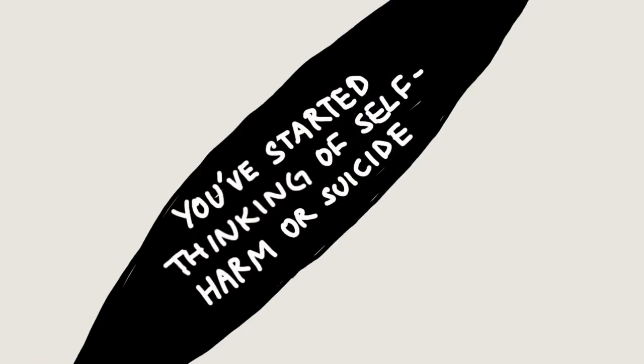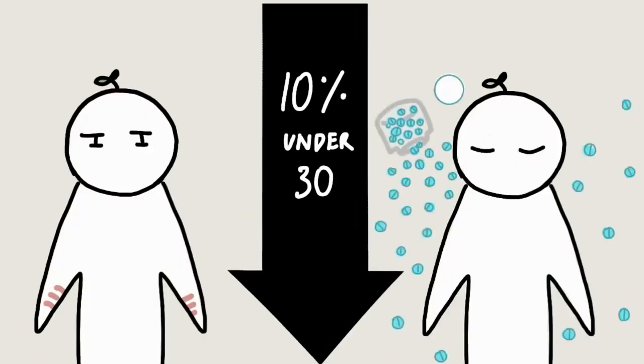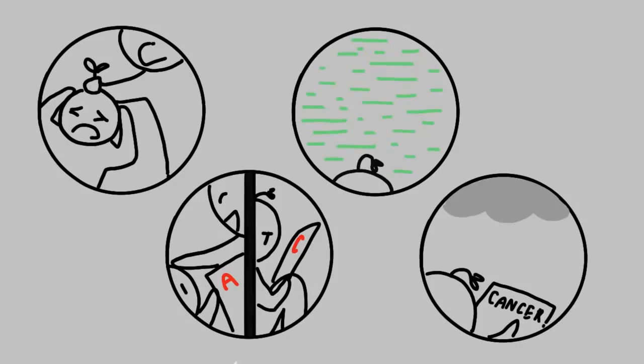And number ten: You've started thinking of self-harm or suicide. The Mental Health Foundation reported up to 10% of people under the age of 30 have thought about self-harm or suicide. There are many reasons people consider self-harm or suicide, such as abuse or neglect at home, a major loss, trauma, or a catastrophe that you can't control or avoid.